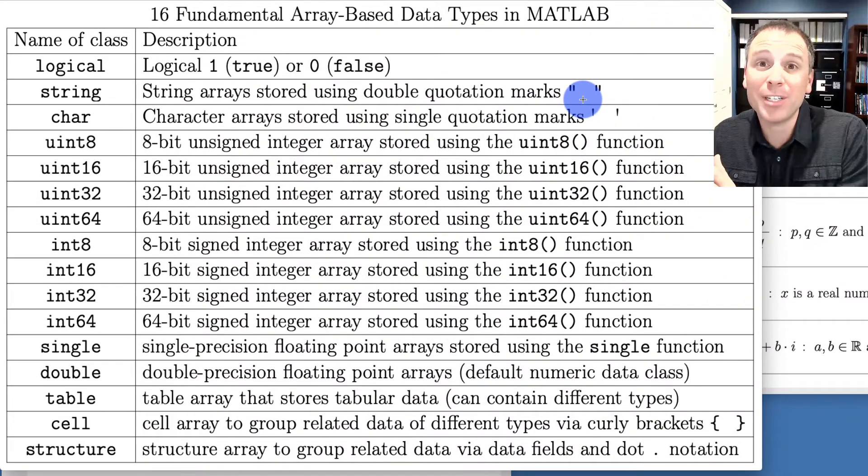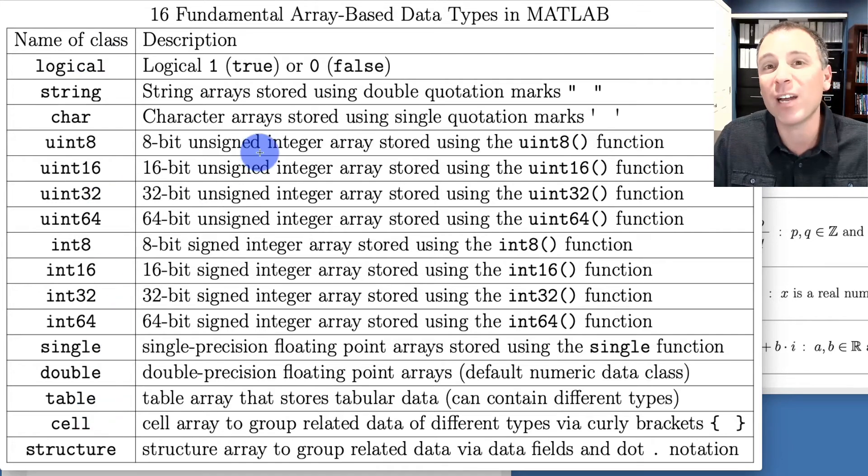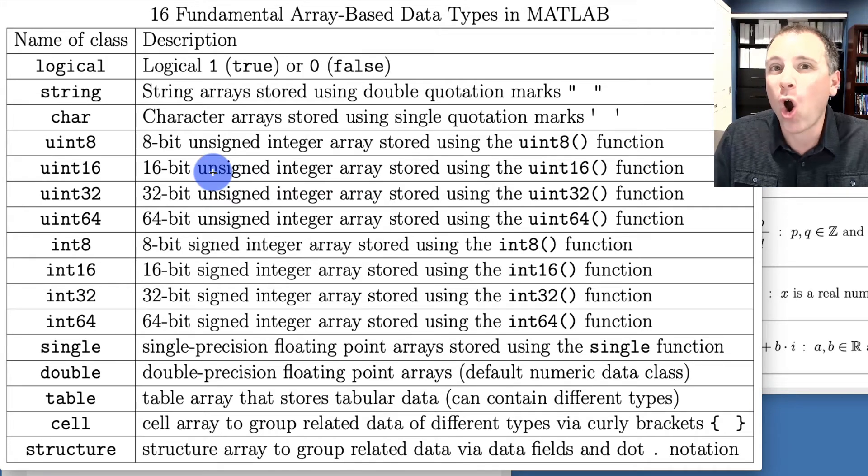Now, if we take that help documentation that we were just looking at and translate it into our own table, that's exactly what I've done here. On the left-hand side, we have the name of our 16 classes, and on the right-hand side, we have a short description. With this in mind, I would say that unsigned integers in MATLAB are a collection of data classes that allow us to encode unsigned integers, in other words, non-negative integers, using various sizes of data.